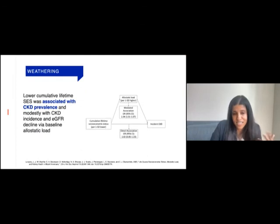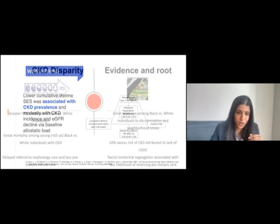My colleague Dr. Joseph Lunyera examined the association between cumulative lifetime socioeconomic status and chronic kidney disease in Black Americans using the Jackson Heart Study. Lower cumulative lifetime socioeconomic status was associated with CKD prevalence and modestly with CKD incidence and eGFR decline through the mechanism of allostatic load.